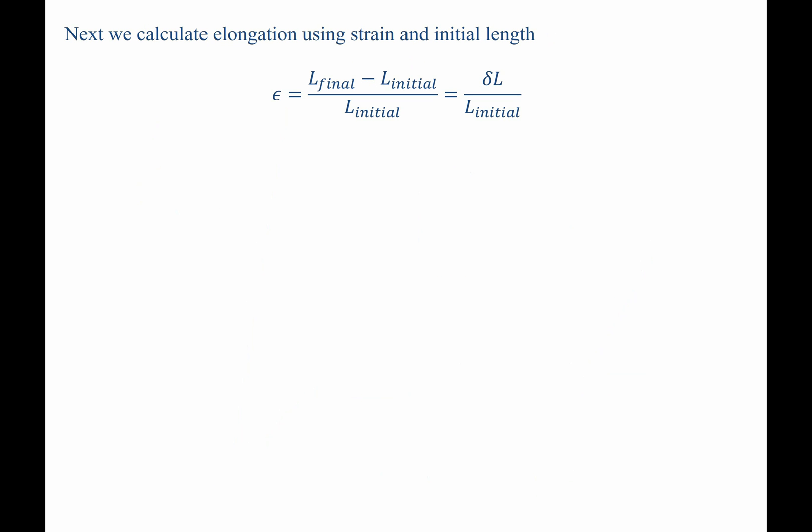The calculation for elongation is as follows. Strain equals the final length minus the initial length, divided by the initial length. Or in other words, δL, which is the elongation we're asked to solve for, divided by the initial length. So let's go ahead and plug these values in. 0.0025 is equal to δL, what we're trying to solve for, divided by 75 millimeters. Multiplying both sides by 75 solves for δL, which equals 0.1875 millimeters.